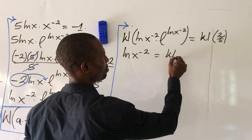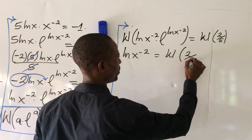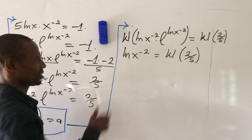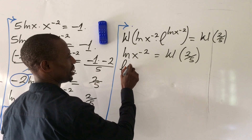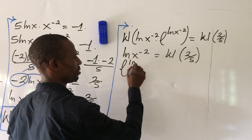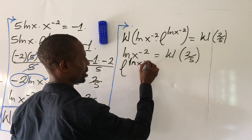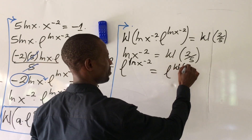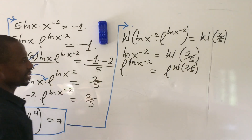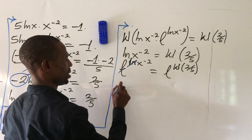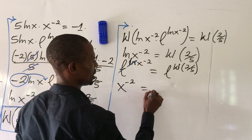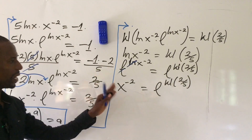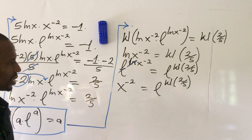So ln(x) to the minus 2 equals W(2/(5e)). We can eliminate the natural log by raising e to both sides: e to the power of ln(x) to the power of minus 2 equals e to the power of W(2/(5e)). Since e to the ln of something just gives that something, we get x to the power of minus 2 equal to e to the power of W(2/(5e)).